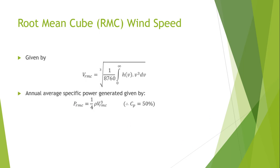The annual average specific power generated by the wind P_RMC is equal to one-quarter times rho, where rho is the air density, and V_RMC is the root mean cube velocity. With an average Cp value of 50 percent, the annual energy potential of the site can be calculated by multiplying this power with 8760.